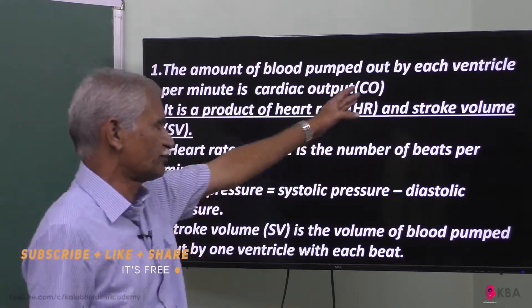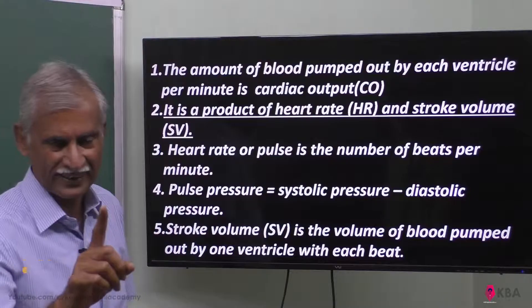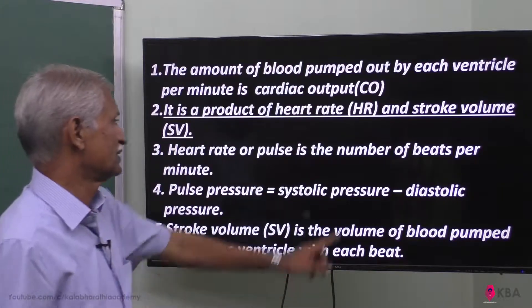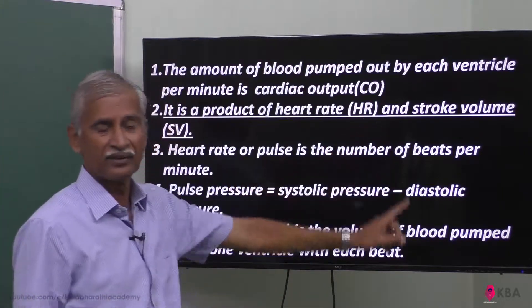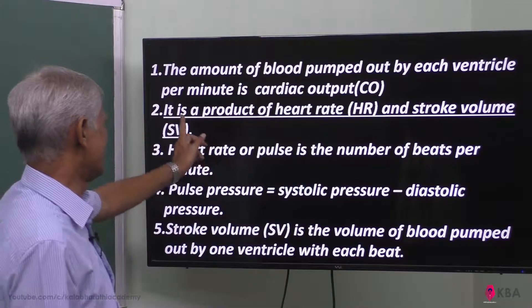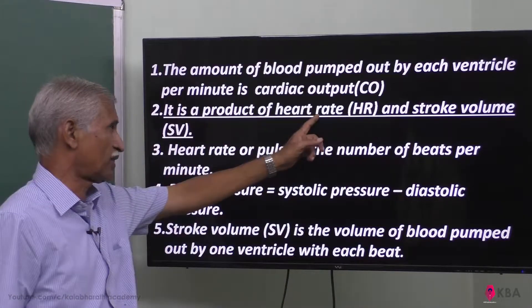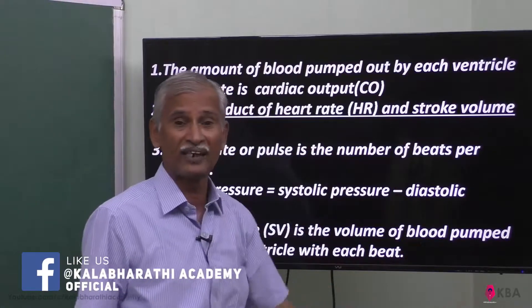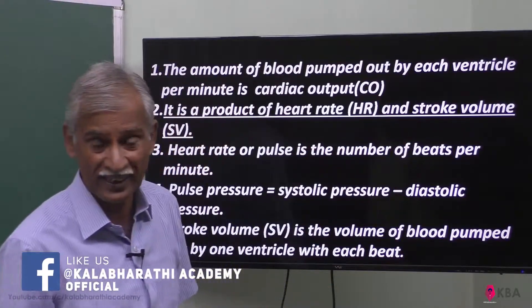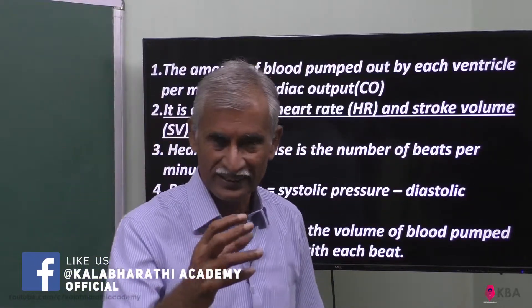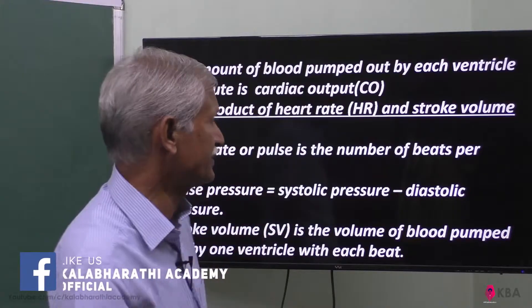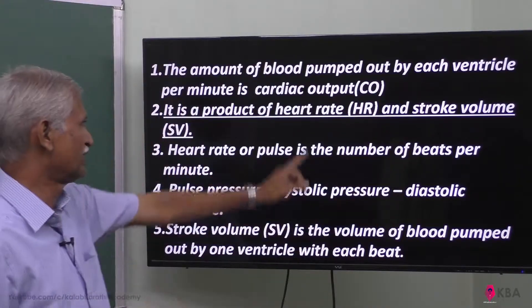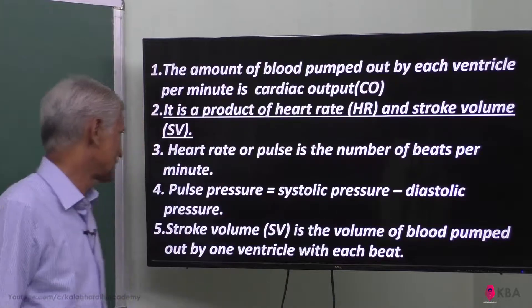How do we calculate cardiac output? The heart beats at 72 beats per minute — that is called the heart rate, or cardiac rate. Cardiac output is the product of heart rate (HR) and stroke volume. The amount of blood sent out of the ventricle is called stroke volume. Multiply them and you get cardiac output.